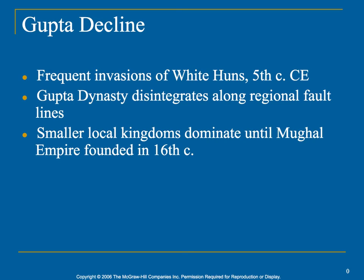It's going to remain this way until the Mughal Empire, which is founded in the 16th century. So there really isn't a centralized or unified India for quite some time — after the Gupta Empire, there's nothing for quite a long time. That pretty much ends Part 1. You basically have two empires you need to know, and they both rise, solidify for a while, and then disappear.